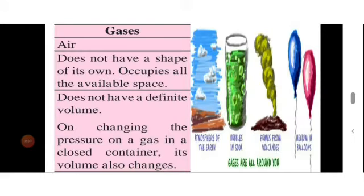Gaseous state: a gas occupies all the available space as it does not have a shape of its own. It does not have a fixed volume; if kept under pressure in a closed container, its volume changes.